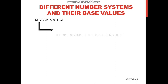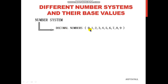The first one is decimal numbers. By its name 'decimal' you can see there will be 10 digits — 0 to 9. These are the decimal numbers. As there are 10 numbers present in the decimal number system, the base of the decimal number system is 10.